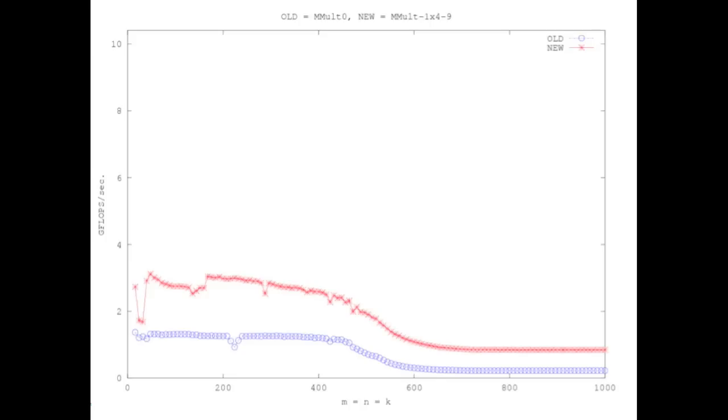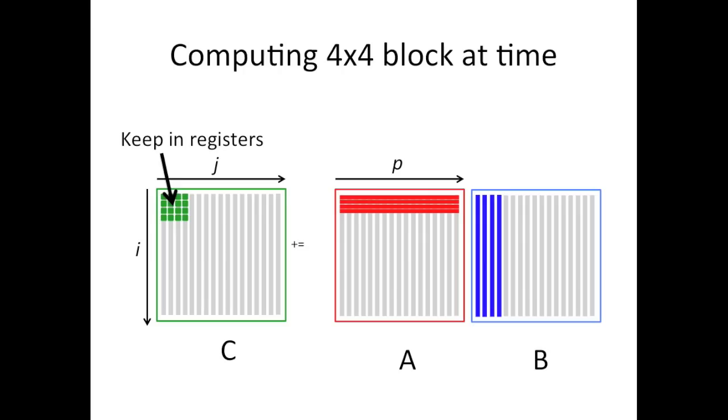Well, notice that as the matrices get very large, you still drop out of the L2 cache, and your performance suffers. And notice that you're still only getting about maybe, oh, eyeballing this one quarter to one third of the peak of the performance of the machine.